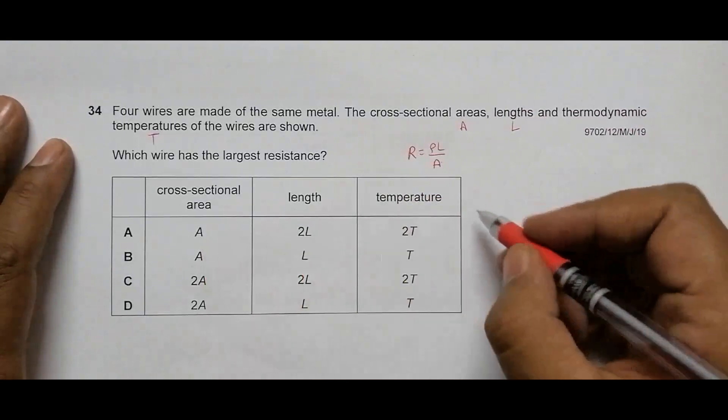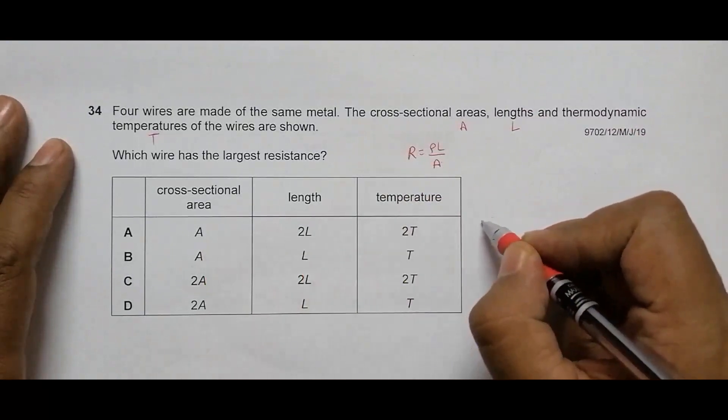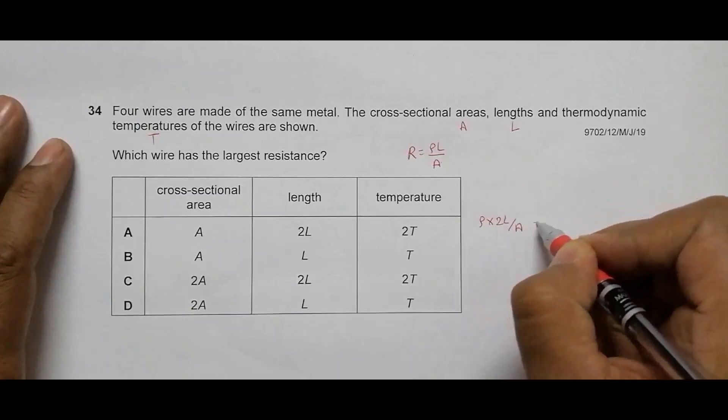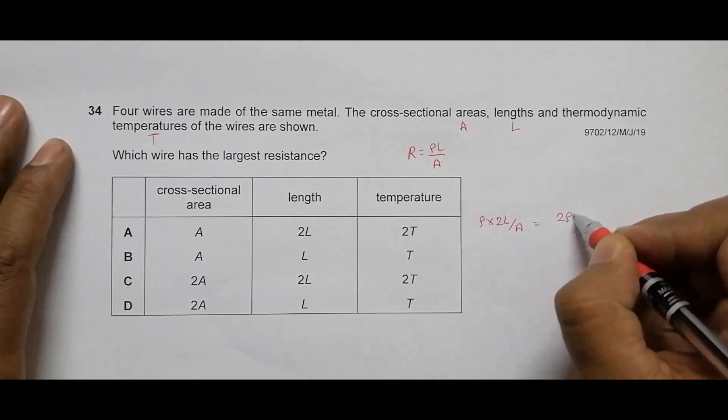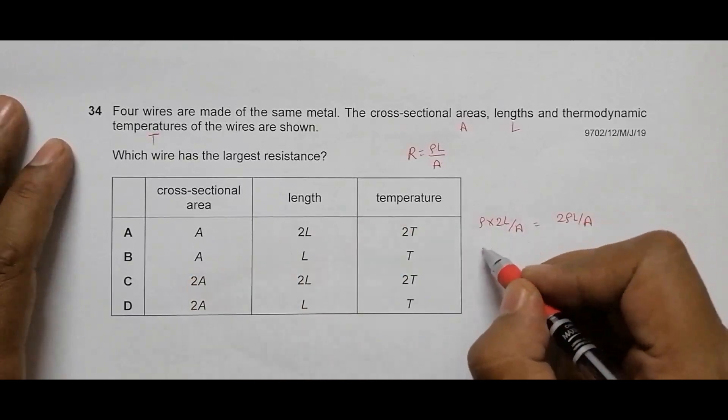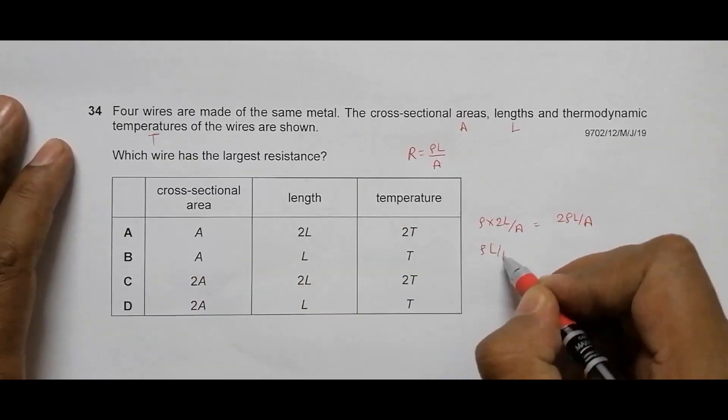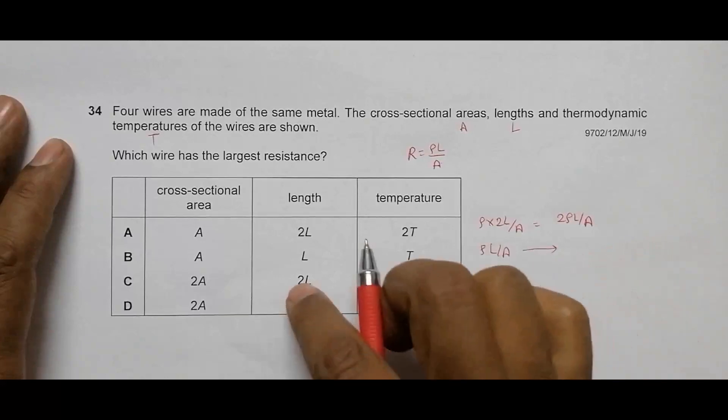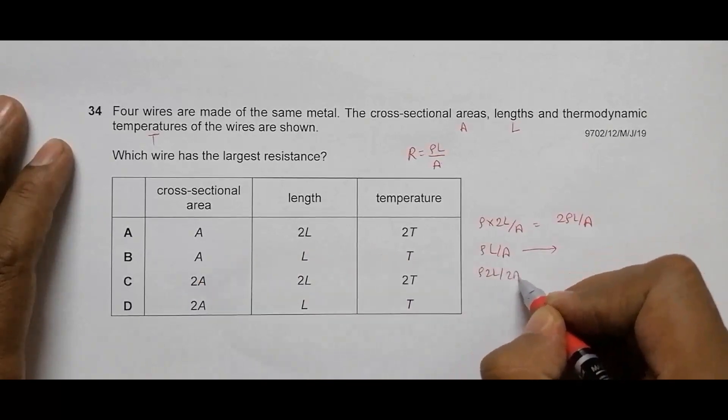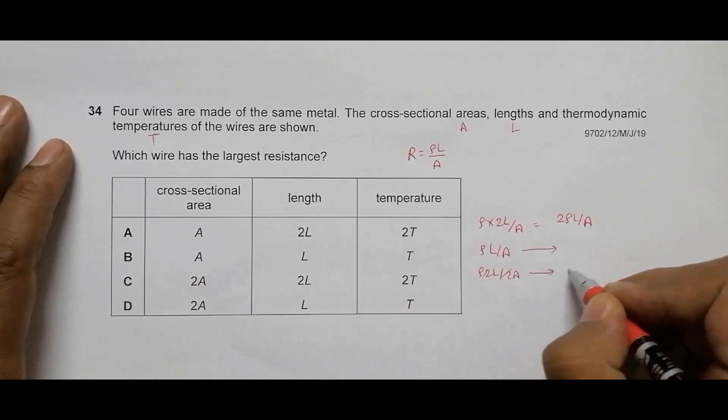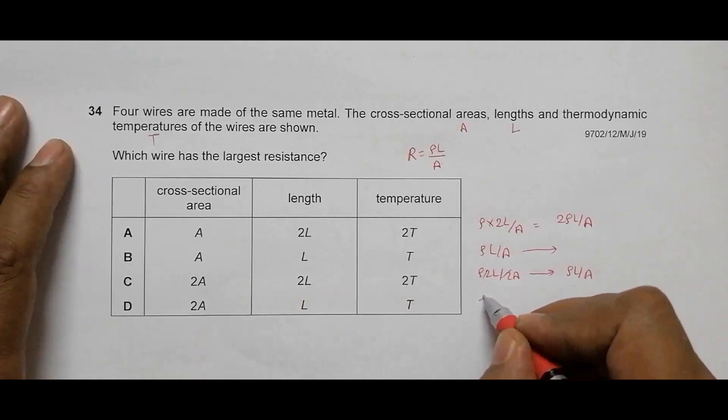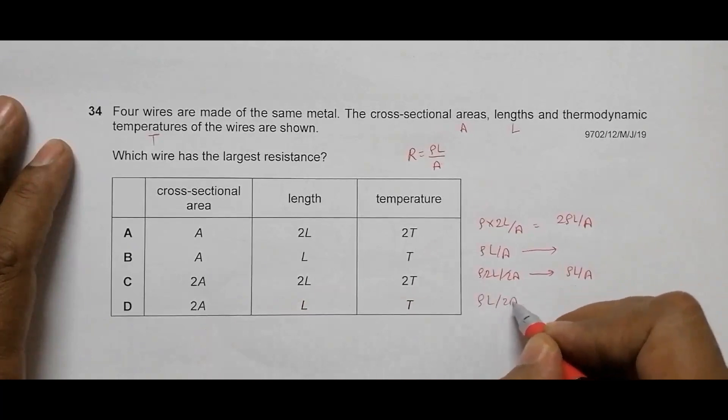For wire A, R equals ρ into 2L by A, which equals 2ρL by A. For wire B, it's simply ρL by A. For wire C, it's ρ times 2L by 2A, so the 2's cancel giving ρL by A. For wire D, it's ρL by 2A, which equals one-half ρL by A.